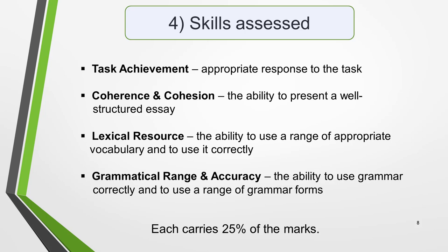It's important to understand how your essay will be assessed. As with all elements of the IELTS exam, the IELTS General Writing test is marked according to 4 marking criteria. These are: task achievement, which is the appropriate response to the task; coherence and cohesion, which is the ability to present a well-structured essay; lexical resource, which is the ability to use a range of appropriate vocabulary and to use it correctly; and grammatical range and accuracy, the ability to use grammar correctly and to use a range of grammar forms. Each carries 25% of the marks.